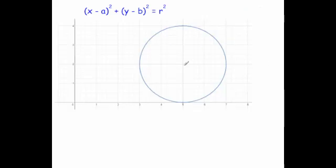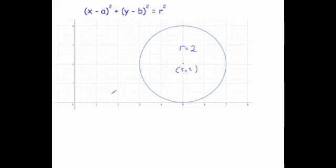Here we've got another circle, and the center of the circle is (5, 2). The radius of the circle is equal to 2. So the equation is x minus a squared plus y minus b squared equals r squared.